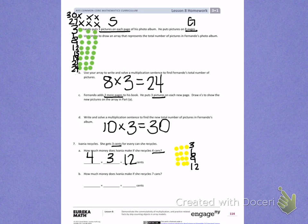How much money does Aviana make if she recycles seven cans? Draw an array, knowing that she gets three cents for each can. This time she's recycling seven cans to decide what her total amount of money she will make is.